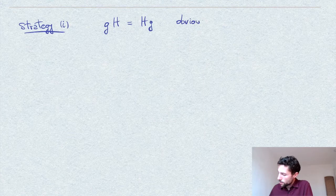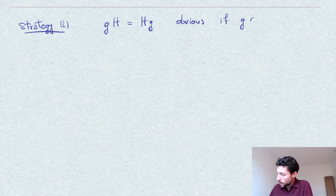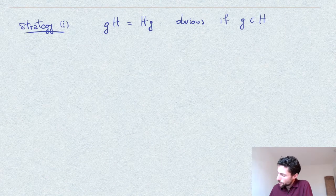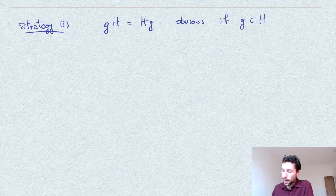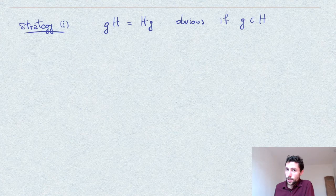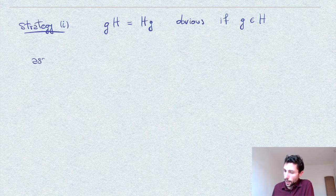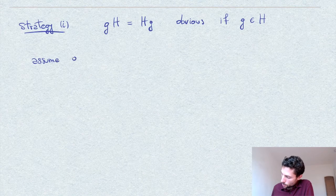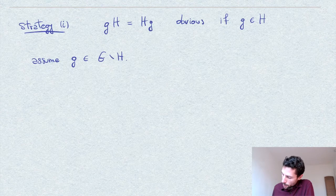Now this is obvious if g is an element already in H. If we are multiplying any elements of H with an element already in H, then we stay in H. So we only need to show this for the remaining elements which are elements not in H. So assume now that g is in the complement of H.